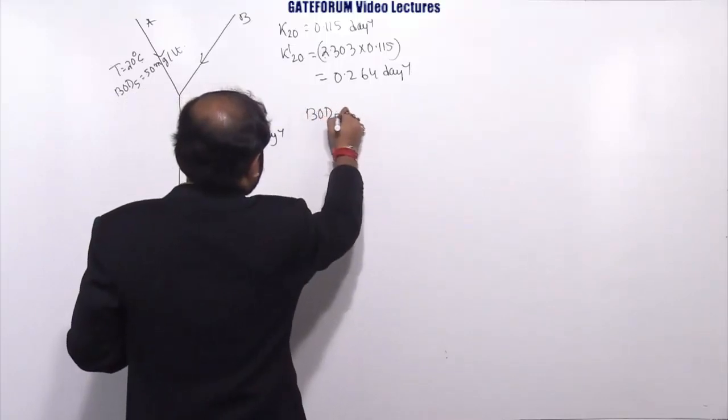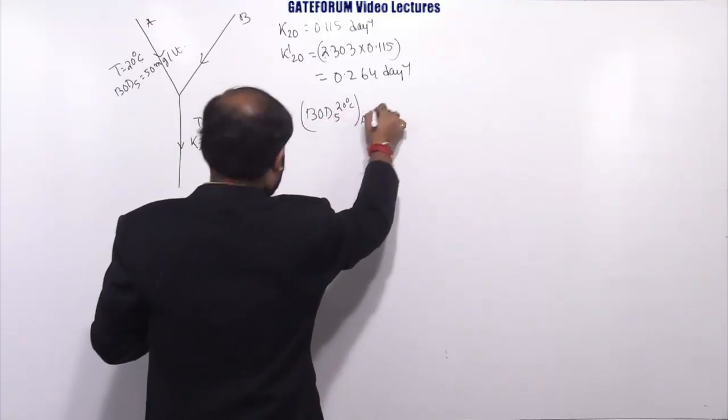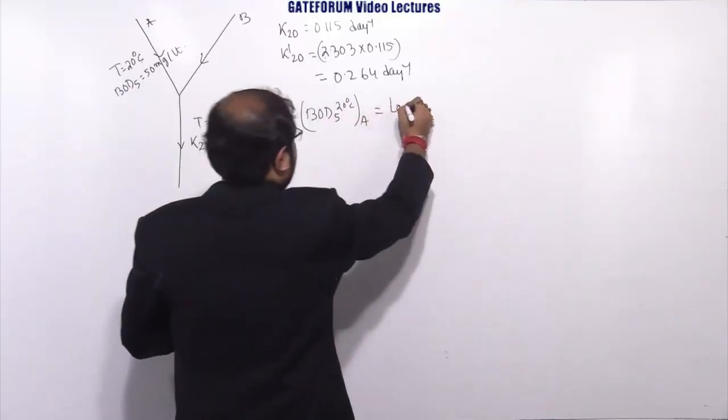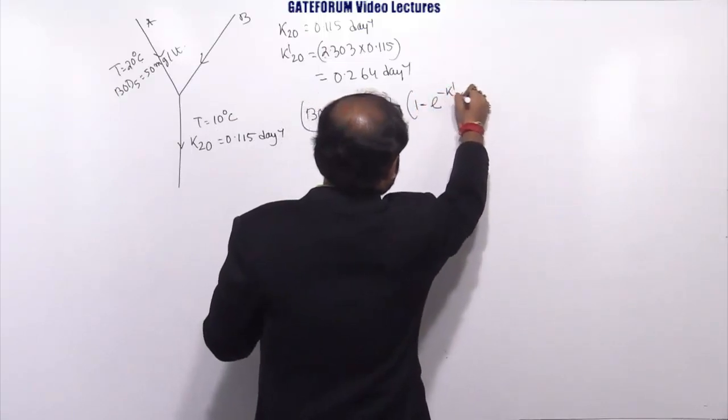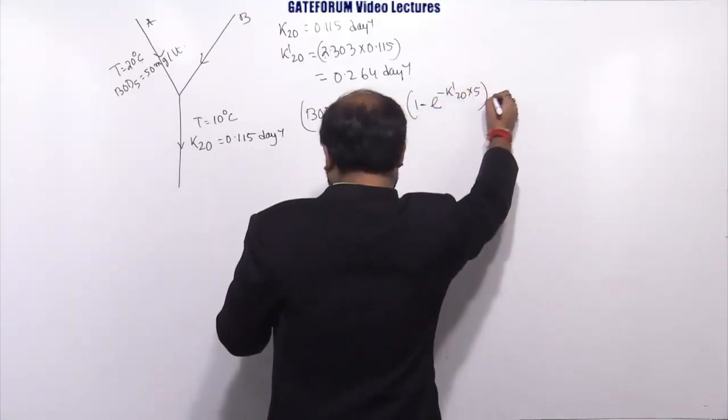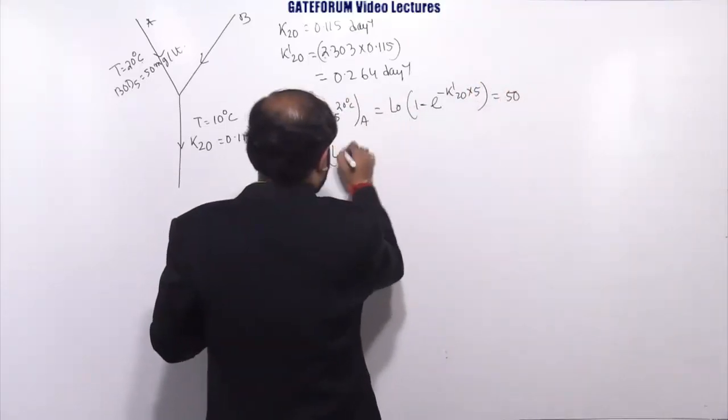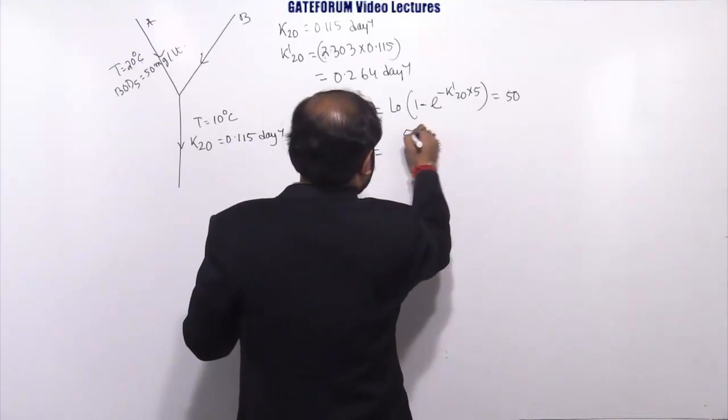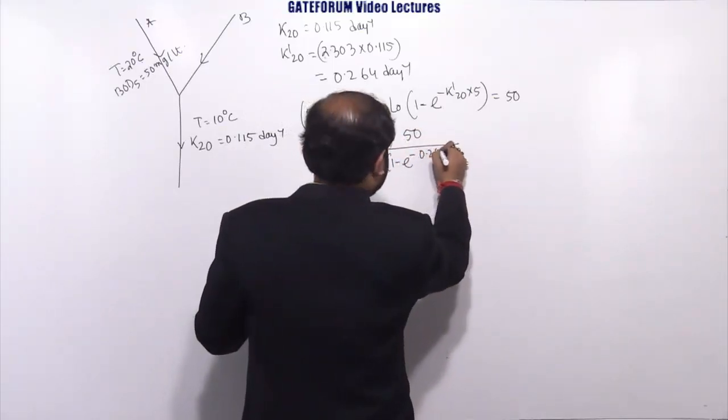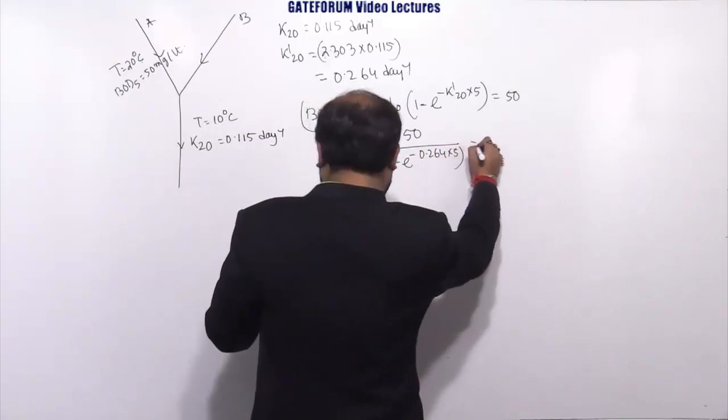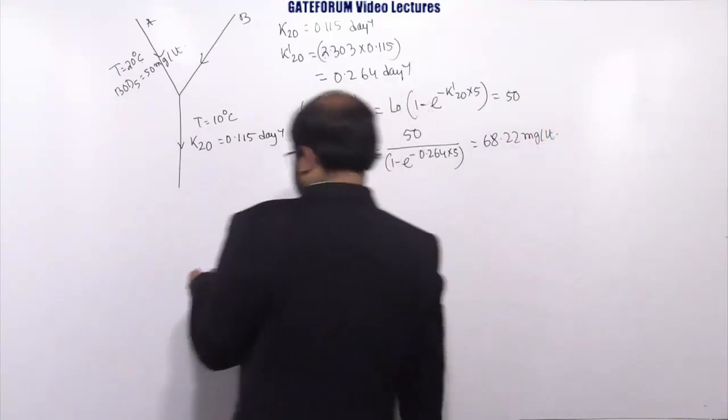BOD5 at 20°C for stream A is L0 into (1 - e^(-K'20 × 5)) which equals 50 given. So L0 of A equals 50 divided by (1 - e^(-0.264 × 5)) that equals 68.22 mg/L.